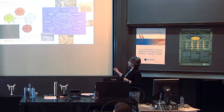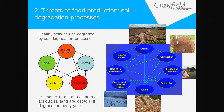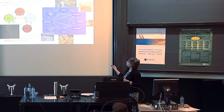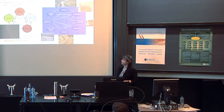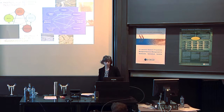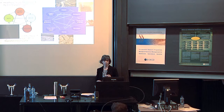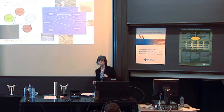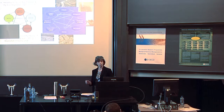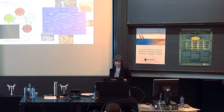On the downside, these are the degradation processes that are changing soil properties and therefore the ability to deliver services: erosion, compaction, salinisation, sealing, urban and infrastructure development, declines in biodiversity, and declines in organic matter. All of these processes are impacting on crucial indicators of soil health. And we can actually quantify this: it's estimated that 12 million hectares of agricultural land are lost to soil degradation processes every year — and that is cumulative.